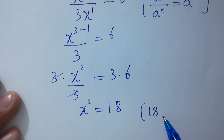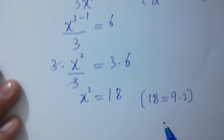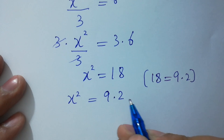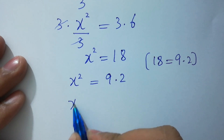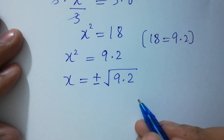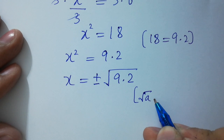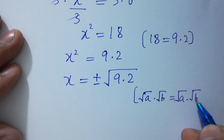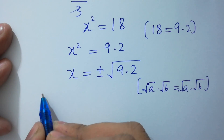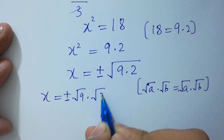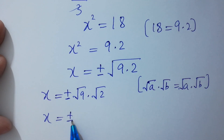Since 18 equals 9 times 2, x squared equals 9 times 2. Now take the square root on both sides: x equals plus or minus the square root of 9 times 2. Since the square root of a times b equals the square root of a times the square root of b, it will be equal to x equals plus or minus the square root of 9 times the square root of 2. So x equals plus or minus 3 square root of 2.